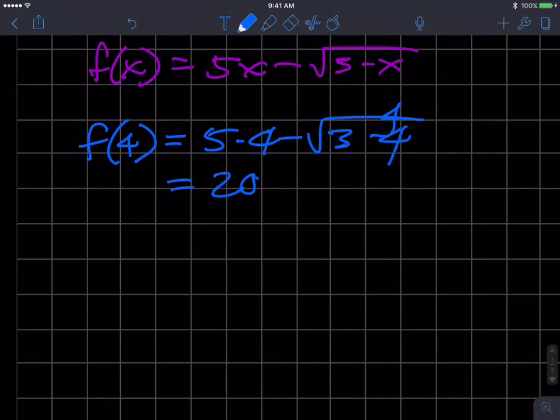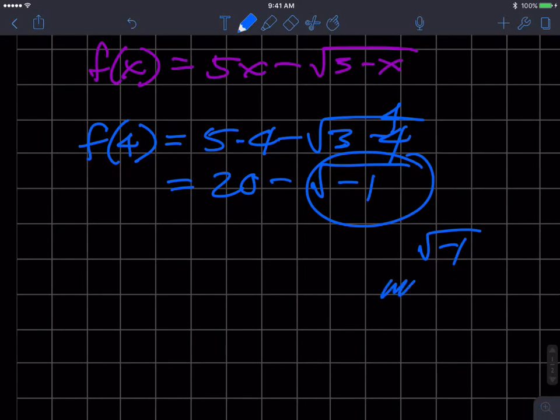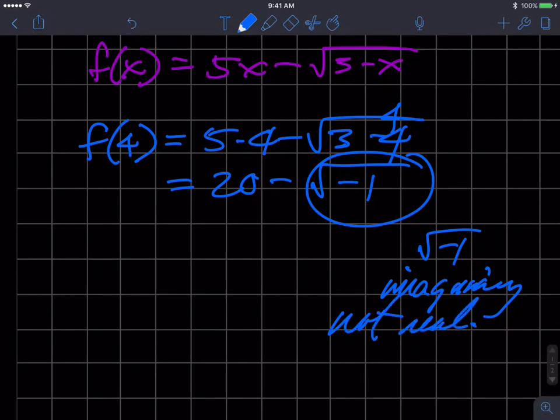And what's going to happen is I get 3 minus 4 is negative 1, and guess what? The square root of negative 1 is an imaginary number, or more importantly it's not real, which means I can't plot it in a real plane.